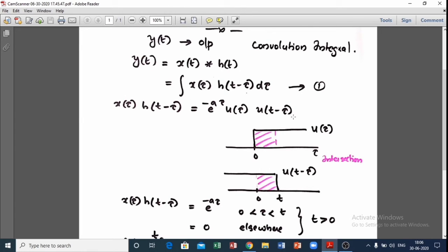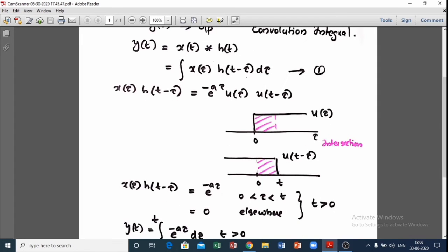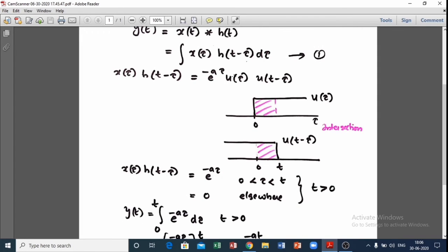This is u(t-τ). t-τ is the shift term. This is the multiplication. This is the intersection area.